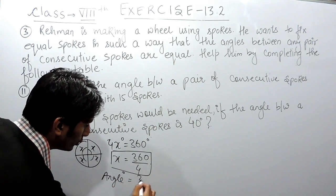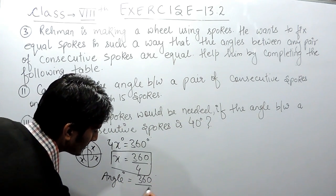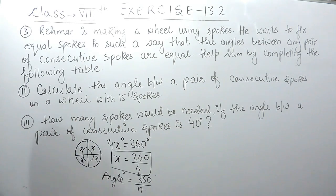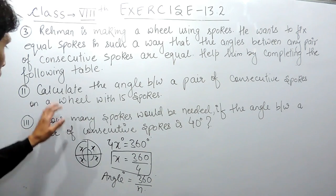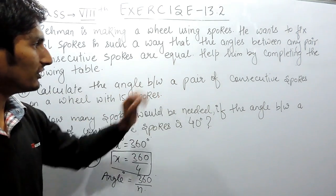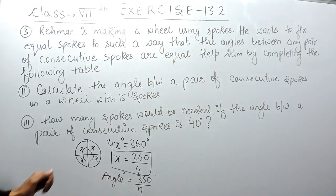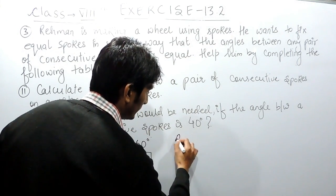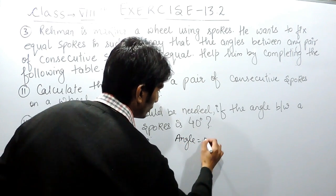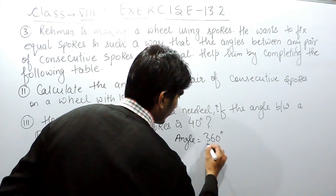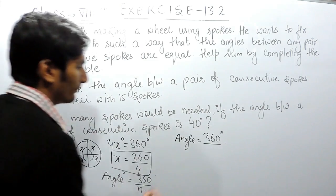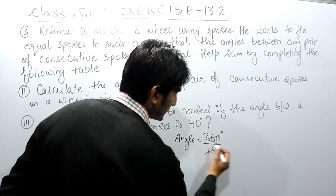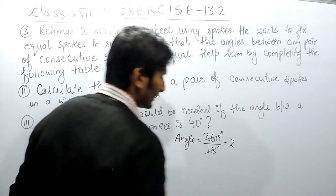So now here, we have to find the angle between a pair of consecutive spokes on a wheel with 15 spokes. You know that to find the angle, we have to divide 360 by the number of spokes, which are 15. So this can be cancelled: 15 two times is 30, and 15 four times is 60. So the angle should be 24 degrees.